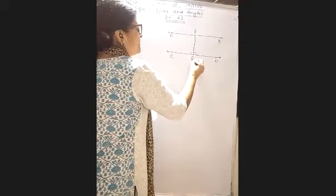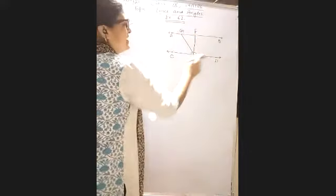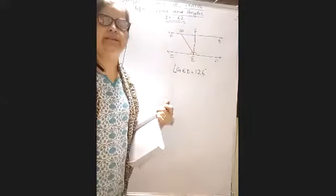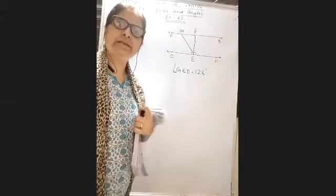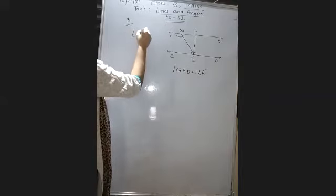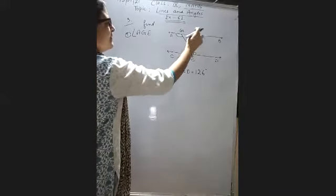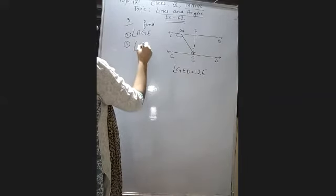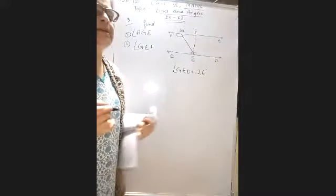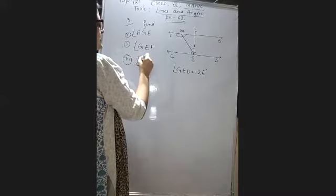You will write down FE. Angle GED — in the question you are given angle GED equal to 126 degrees. And what do you have to find? You have to find three angles. The first one is angle AGE. The second angle you have to find is angle GEF. And lastly, you have to find angle FGE.